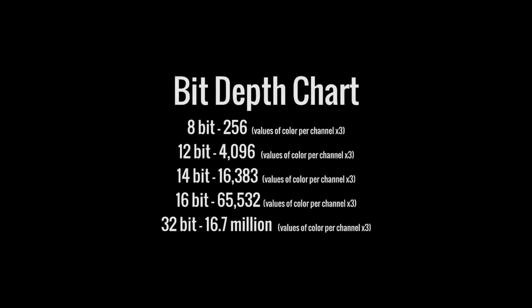Let's take a brief look at this chart. At 8-bit, there are 256 colors per channel. At 14-bit, we have 16,000 bits per channel. At 16-bit, roughly 65,000. And at 32-bit, it's 16-plus million values of color per channel. We will never actually see that — it's a mathematical equation — but you can see just how much more information you're getting in 32-bit versus 14-bit. It's a big jump.